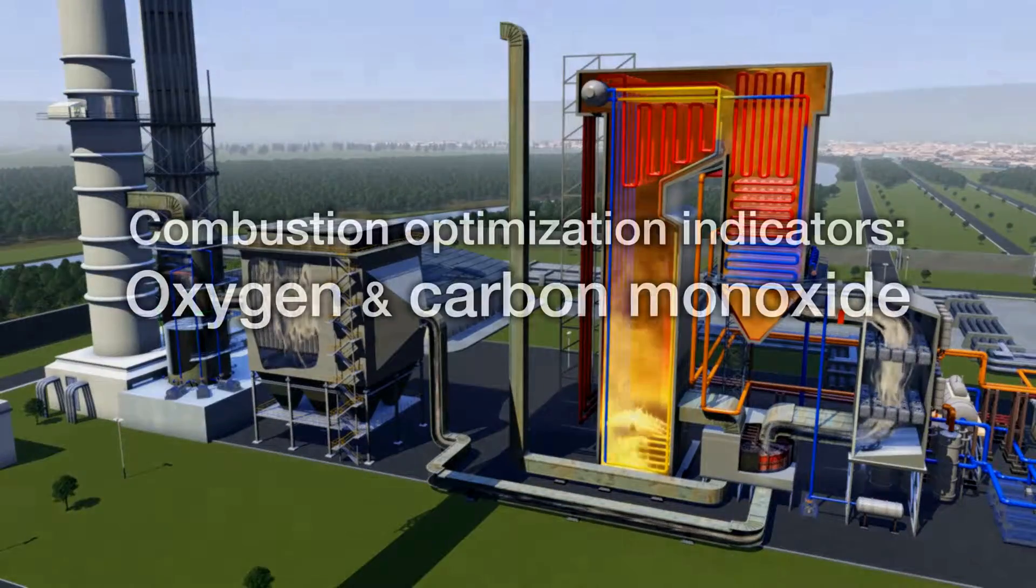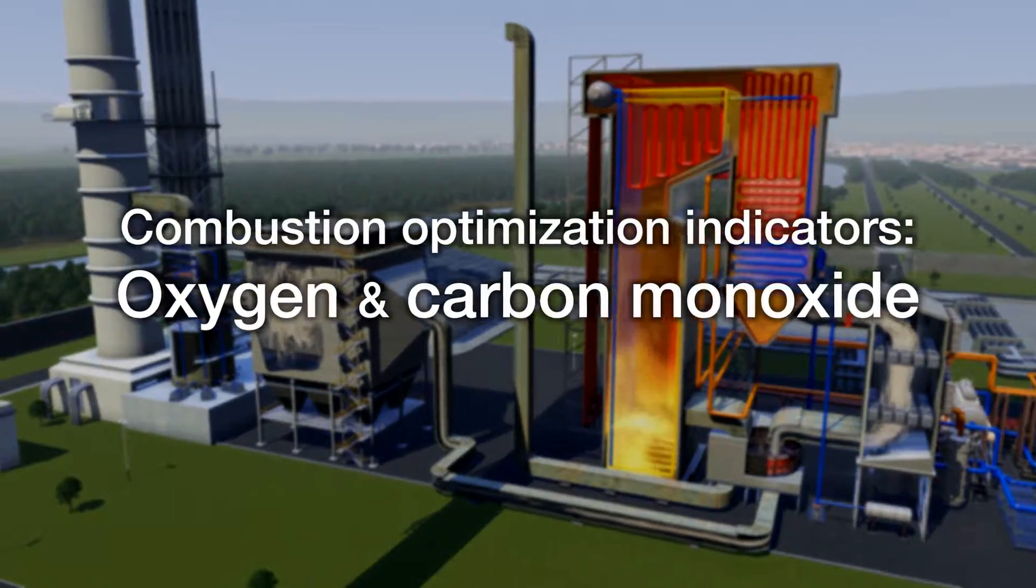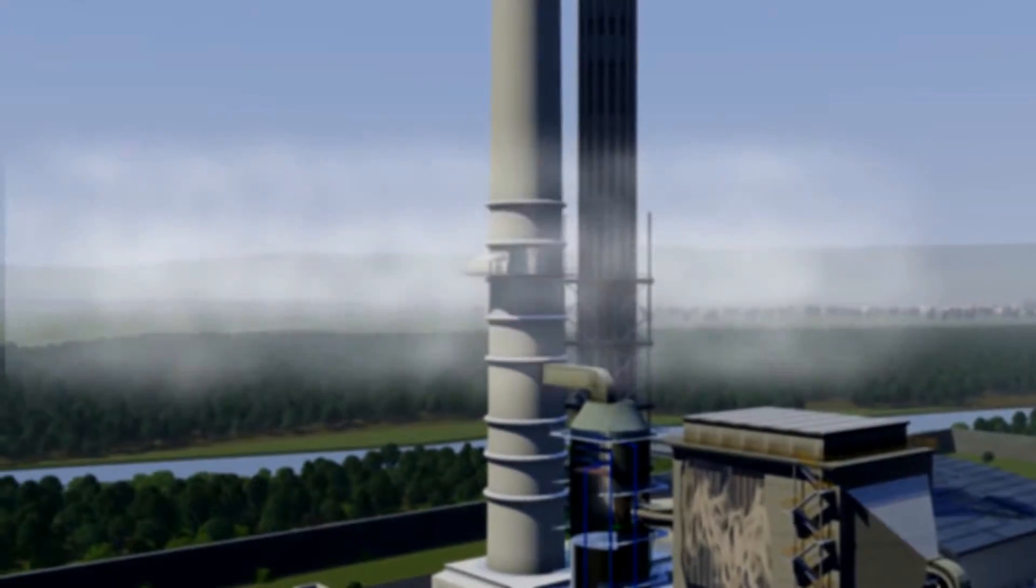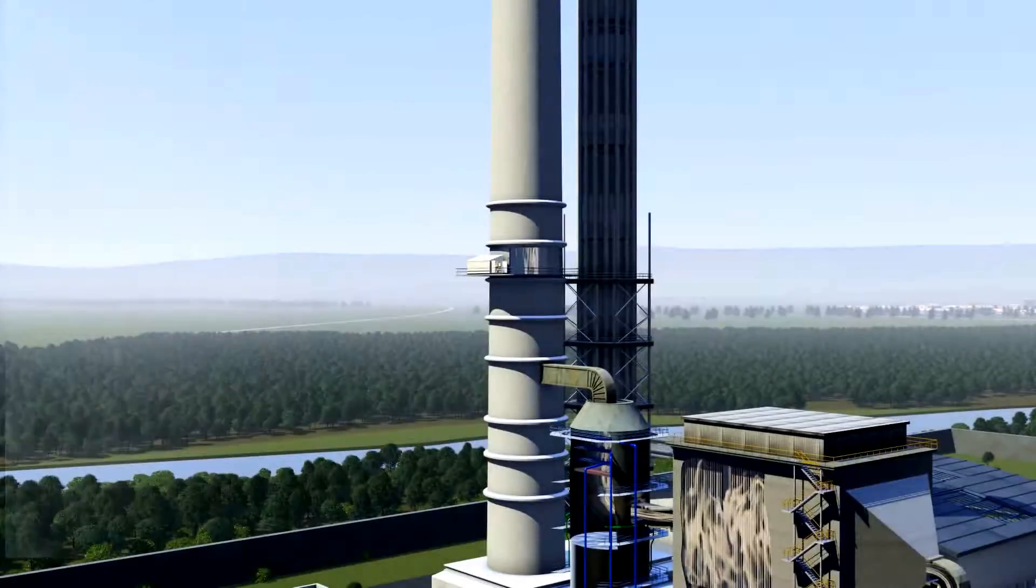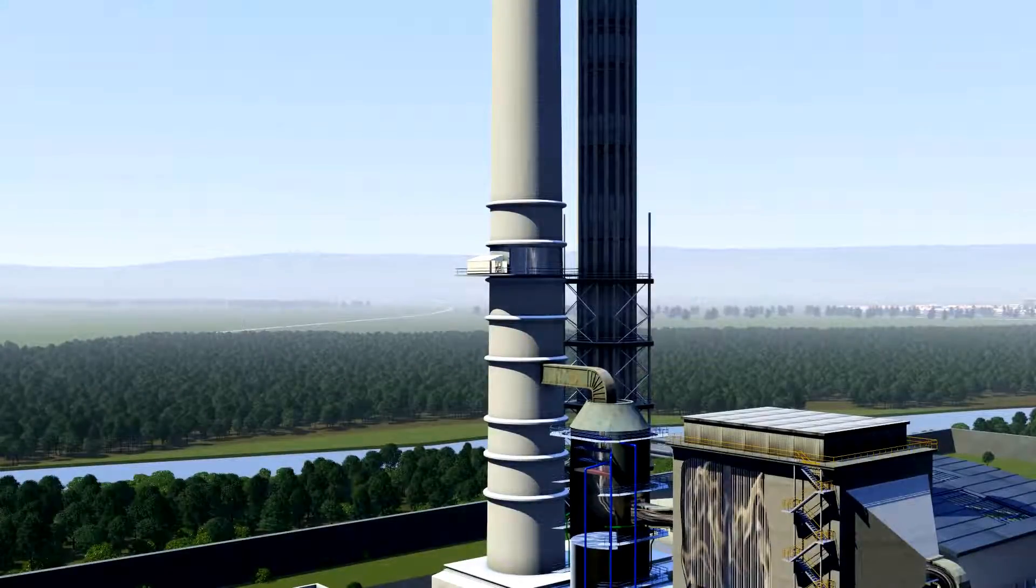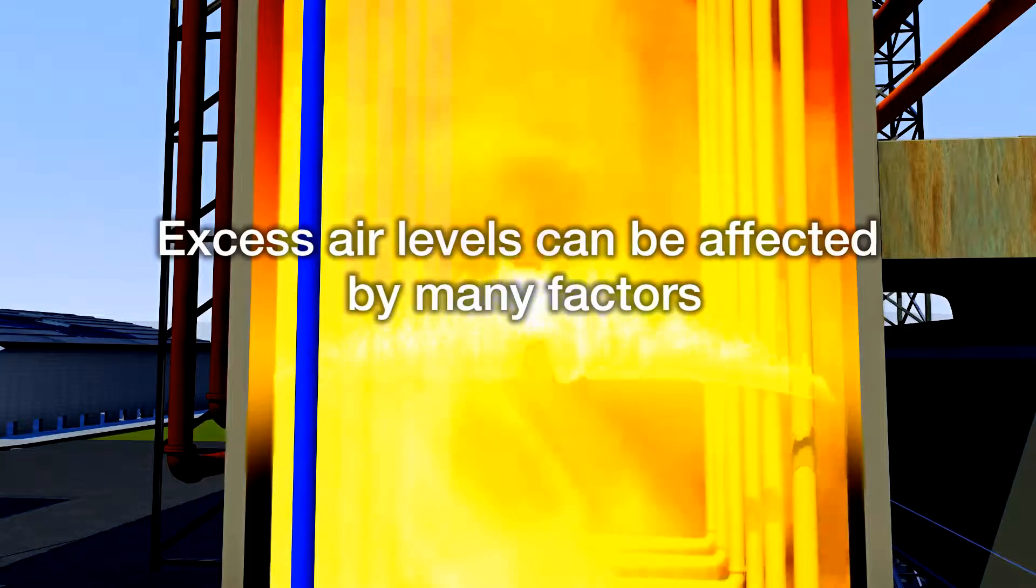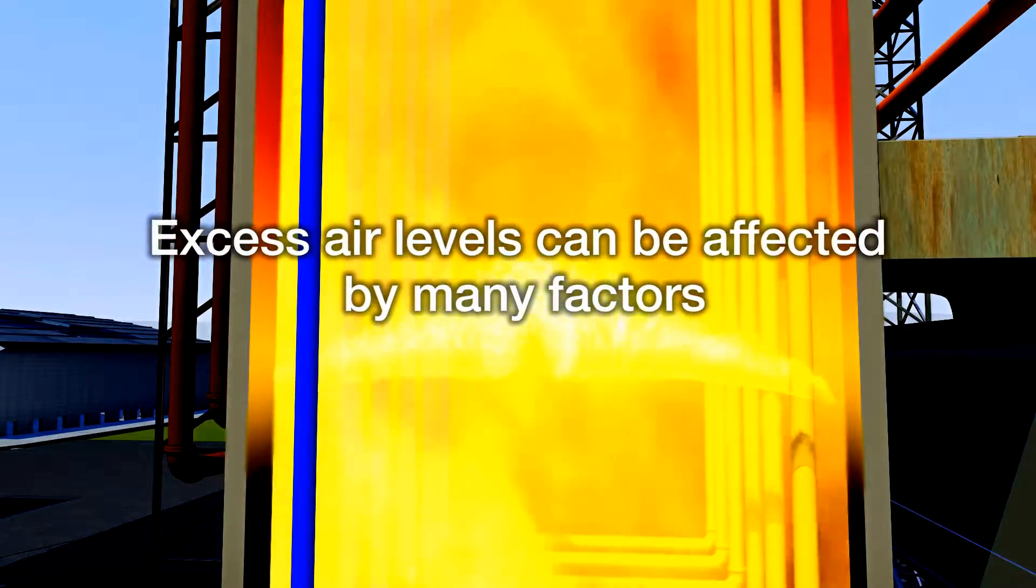Two gases that provide a particularly good indicator for combustion optimization are oxygen and carbon monoxide. Accounting for approximately 21% of the composition of atmospheric air, oxygen provides an excellent indicator for regulating excess air. However, maintaining the correct level of excess air for combustion can be complicated by variations in the fuel and the air.